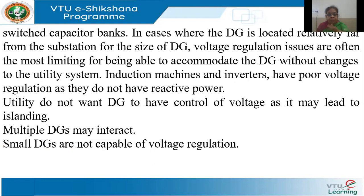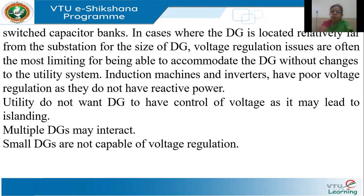In general, if you have synchronous machines, because of the excitation control, voltage regulation is possible. But if the interface uses induction machines or inverters, these two generally have very poor voltage regulation as they do not have reactive power capacity of their own and hence are not good for voltage regulation. Utilities themselves do not prefer to hand over the voltage regulation function to the DGs. When there are multiple DGs — after all it is distributed — these DGs may interact and this may further deteriorate actual voltage regulation. If DGs are of small size, they will not have the capacity to regulate the voltage either. In short, DGs are not effective in voltage regulation and are not actually meant for voltage regulation.